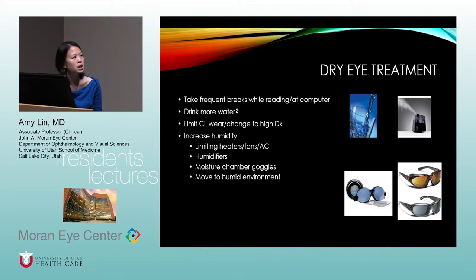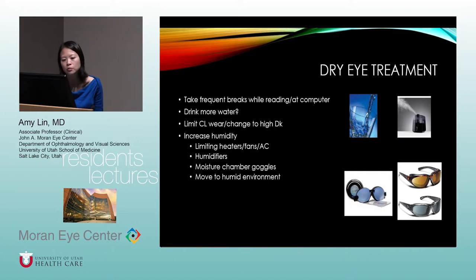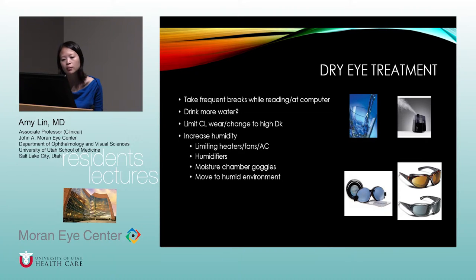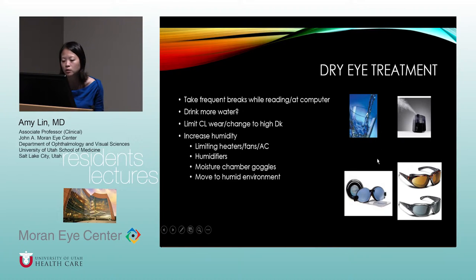Starting with basic non-prescription dry eye treatments: frequent breaks while reading or at the computer, drinking more water (though only helpful if someone is dehydrated), limiting contact lens wear or switching to high-Dk lenses, and increasing humidity by limiting heaters, fans, or AC, adding a humidifier, or using moisture chamber goggles — which can also be worn at night as a stylish sporty option that creates a moisture chamber around the eye. Moving to a more humid environment is also helpful.